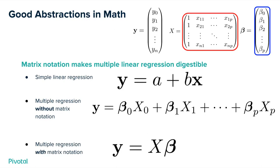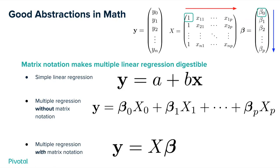What comes along with matrix notation is this abstraction — the notion of how to multiply matrices. How that works is you iterate through a column and a row, multiply the corresponding X times each beta all the way through, and sum those up. That is equivalent to Y equals X beta. It just shows you how you can reason about things more compactly with the right abstraction.